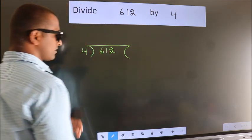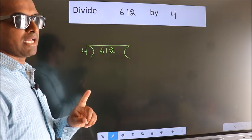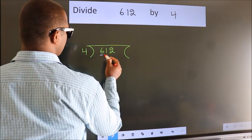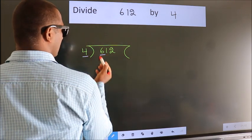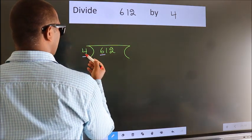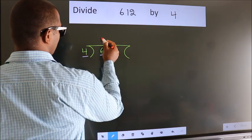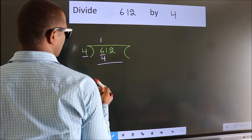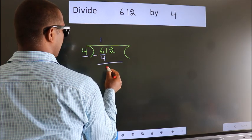This is your step 1. Here we have 6, here 4. A number close to 6 in 4 table is 4 once 4. Now we should subtract, we get 2.